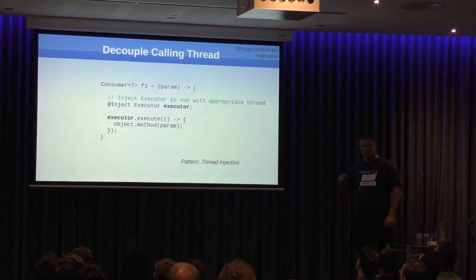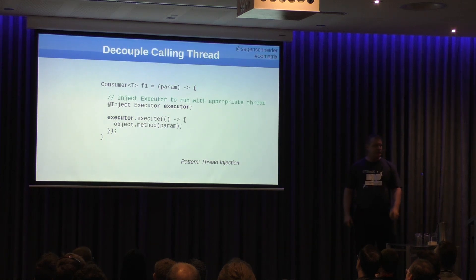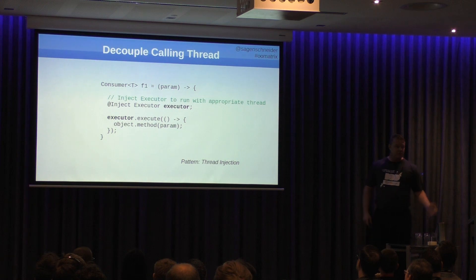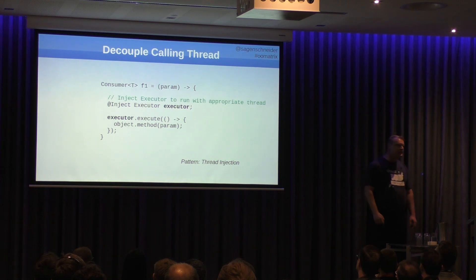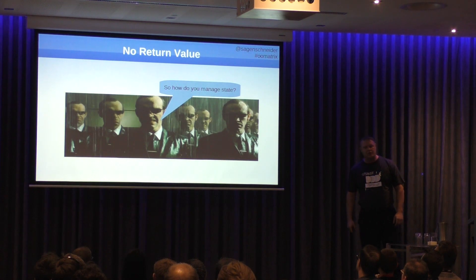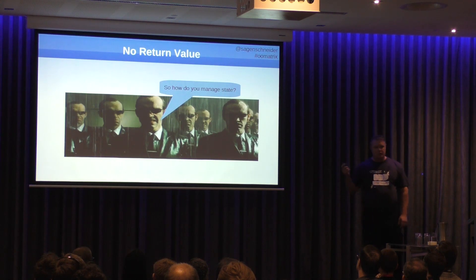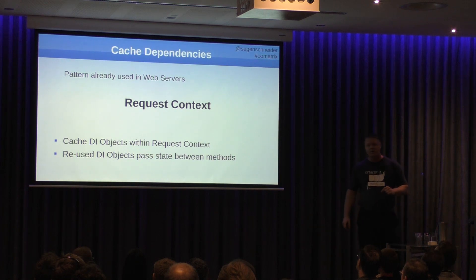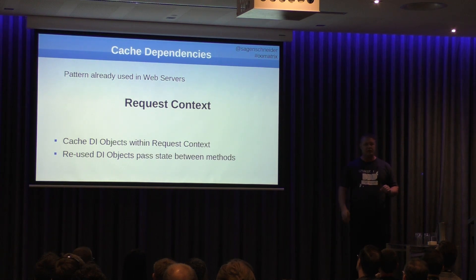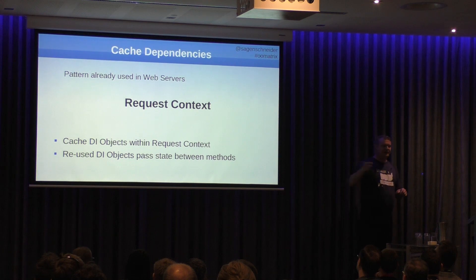We can apply the same process to the thread — just inject an executor. Now I can choose a different execution pool to execute that method. It could be the same thread as the caller using a synchronous one, or it could be its own thread pool. And we've already solved the parameter problem — we do it in our web servers all the time with a request context. Think about a controller: it loads everything into the request context, the view picks it up. We do the same as we call these methods: load to a context and dependency inject into further methods down the line.